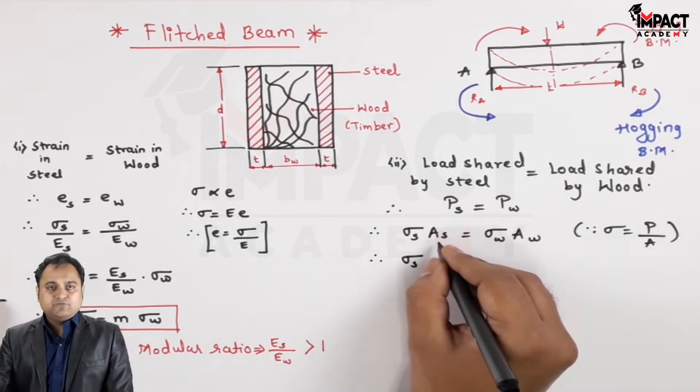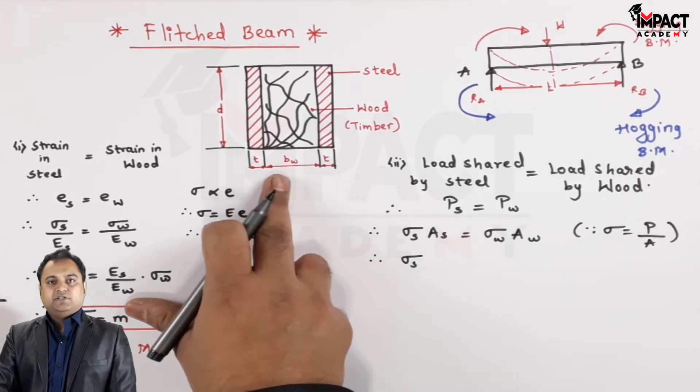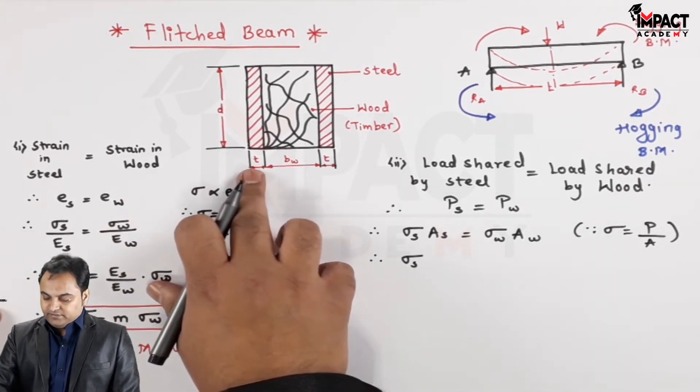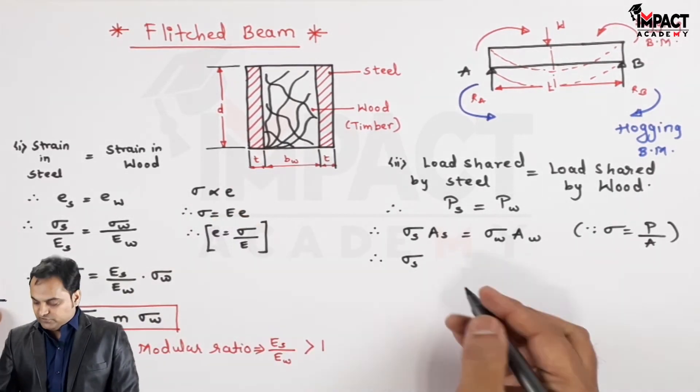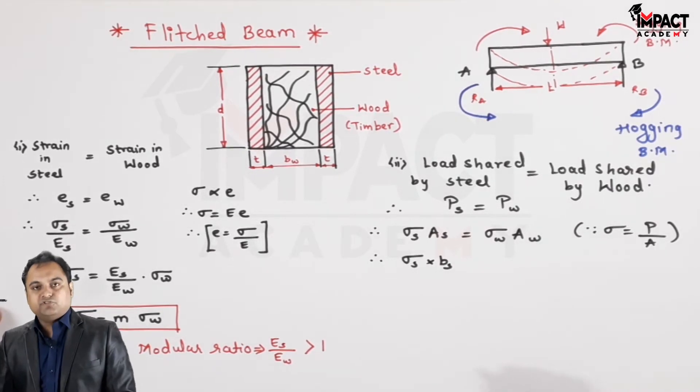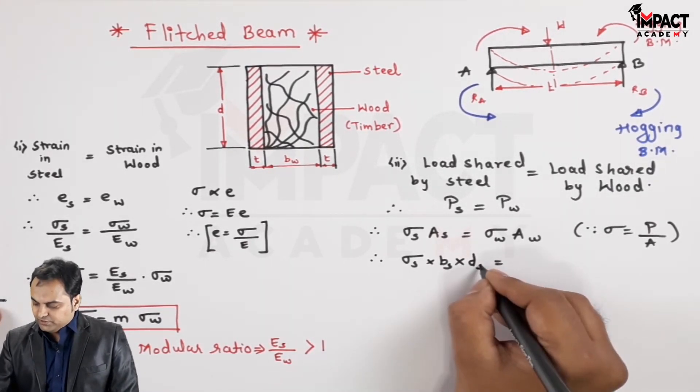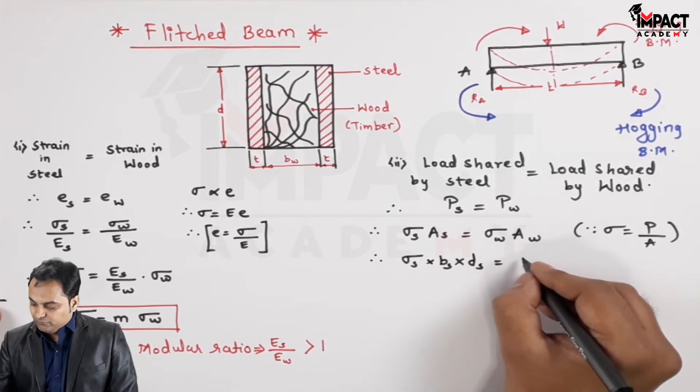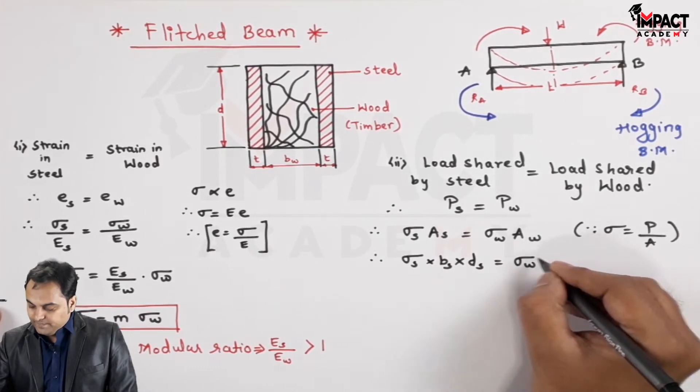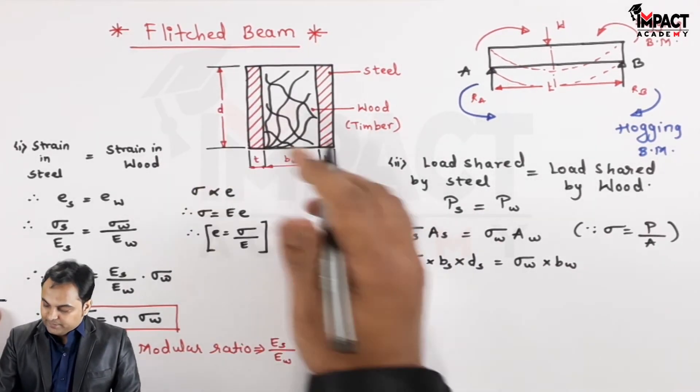It is stress into area because stress is load upon area, so load becomes stress into area. Therefore, the area of steel: steel is having twice of the thickness into d. That twice of the thickness can be taken as the total width of the steel, so it would be b_s, the width of steel into the depth of steel, that is the total area. And in case of wood it would be b_w, the width of wood into the depth of wood.